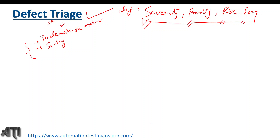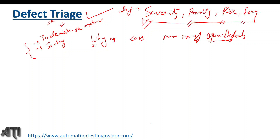Why do we need defect triage? To evaluate and carry out the defect triage process, we conduct a meeting called the defect triage meeting. The first reason is simply to prioritize defects. Another key reason is that sometimes we have very little time to fix defects before a release, but we have a large number of open defects — that's why we conduct the defect triage meeting.